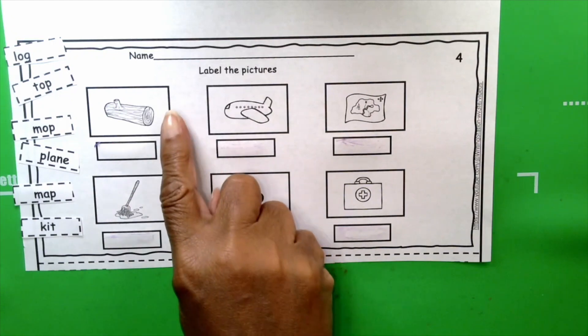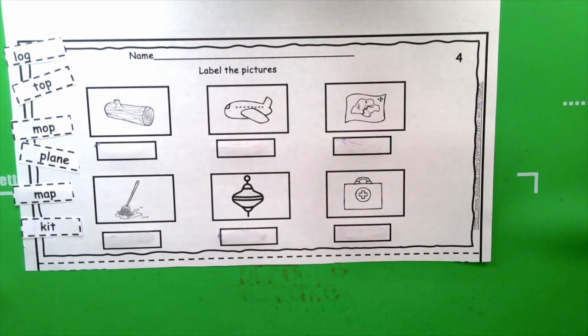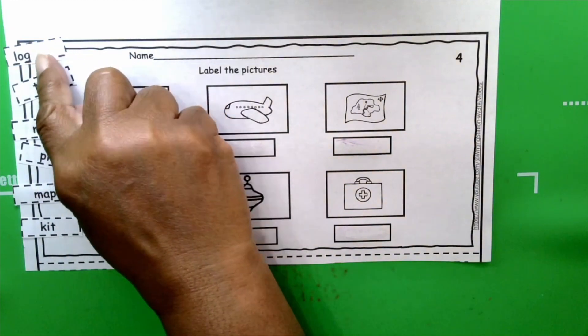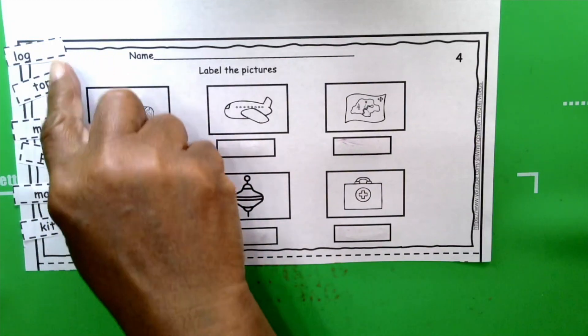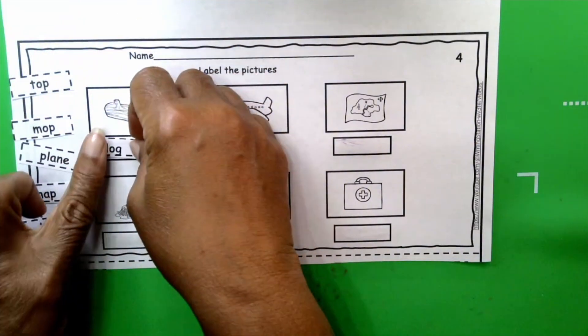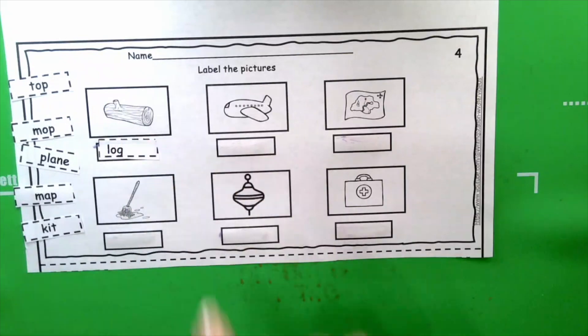Our first picture is log. What's the beginning sound for log? And what letter is that? L. Log, L-O-G. We only have one word that begins with L, so we know that this is it. Log, L-O-G.